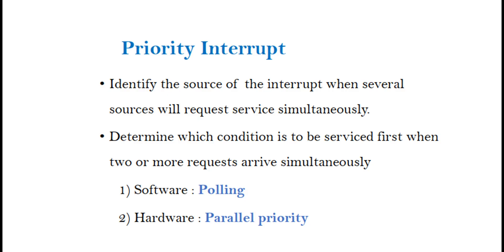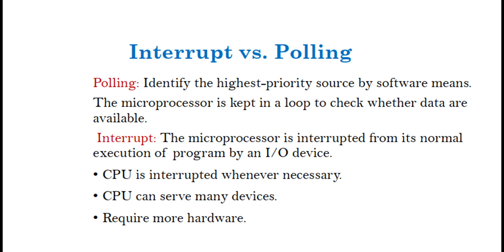Priority Interrupt: Used to identify the source of the interrupt when several sources request service simultaneously, and to determine which condition is to be serviced first when two or more requests arrive simultaneously. Methods include: (1) Software Polling, and (2) Hardware Parallel Priority. Polling identifies the highest priority source by software means.